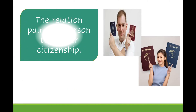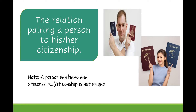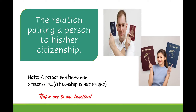Another example: the relation pairing a person to his or her citizenship. Note that a person can have dual citizenship — for example, being a Filipino citizen and at the same time an American or Canadian citizen. So citizenship is not unique, and therefore this is not a one-to-one function.